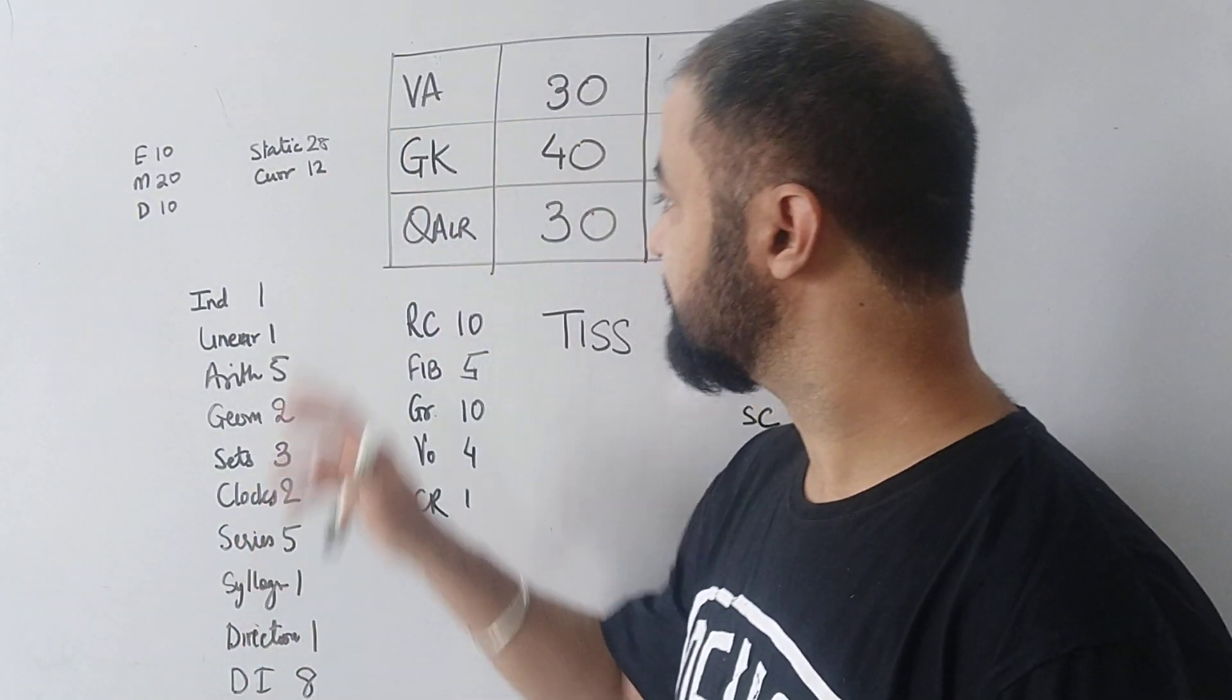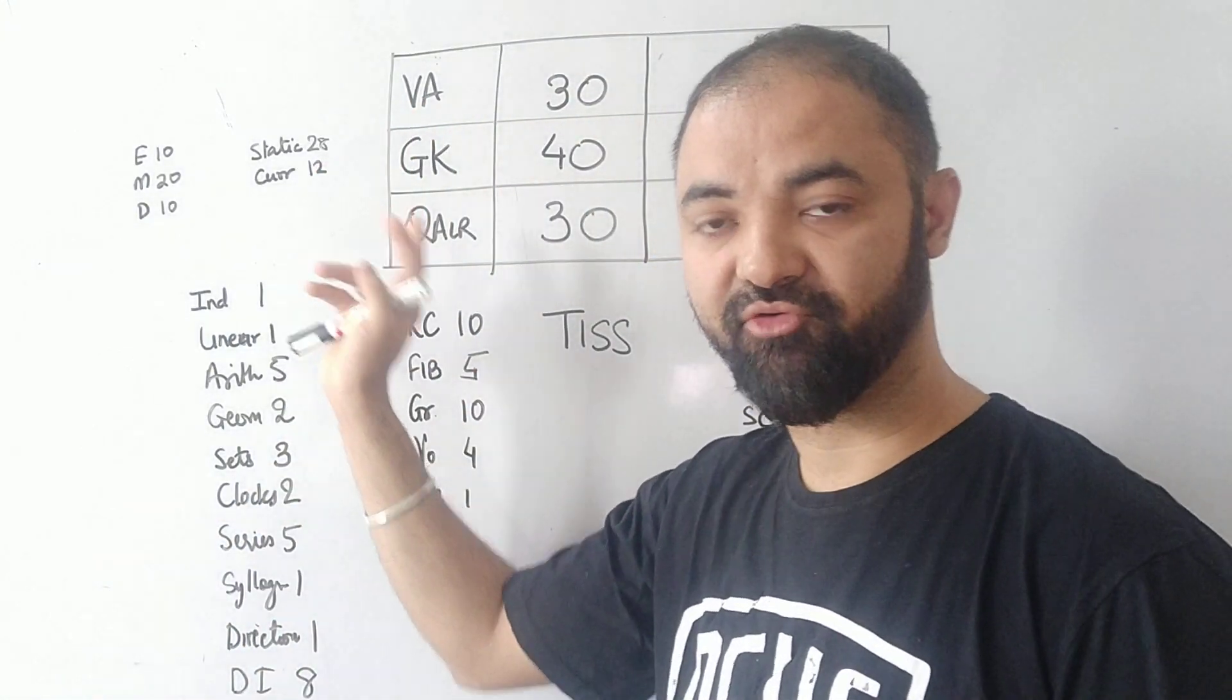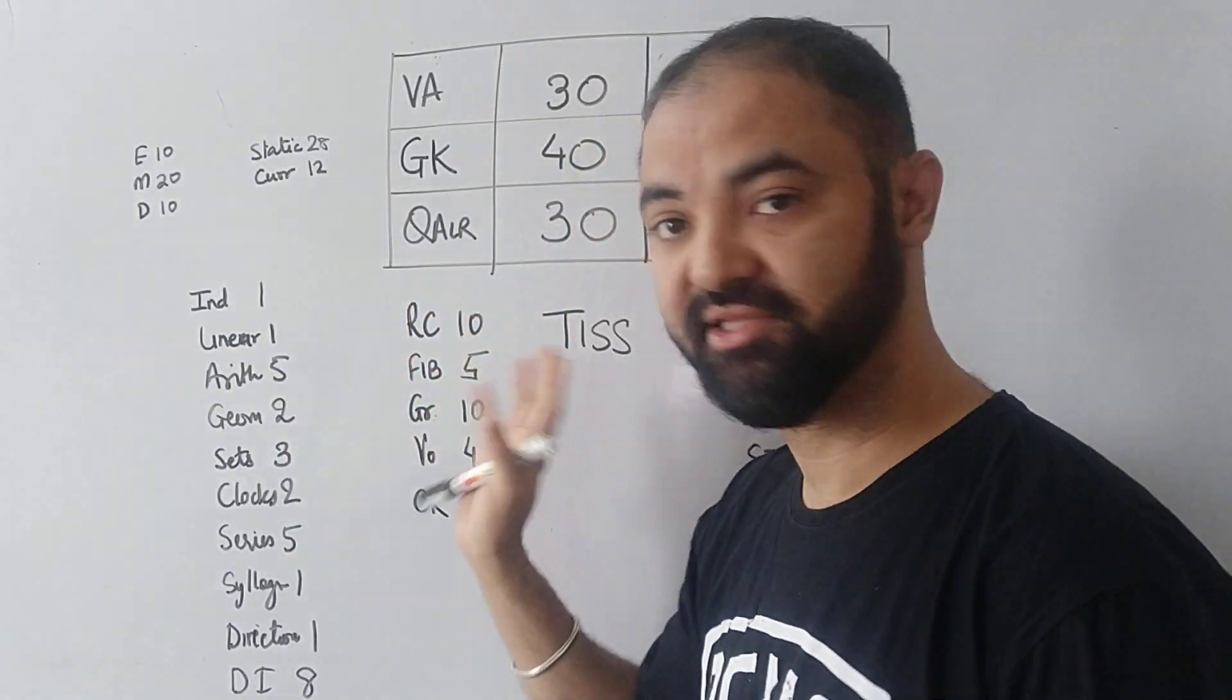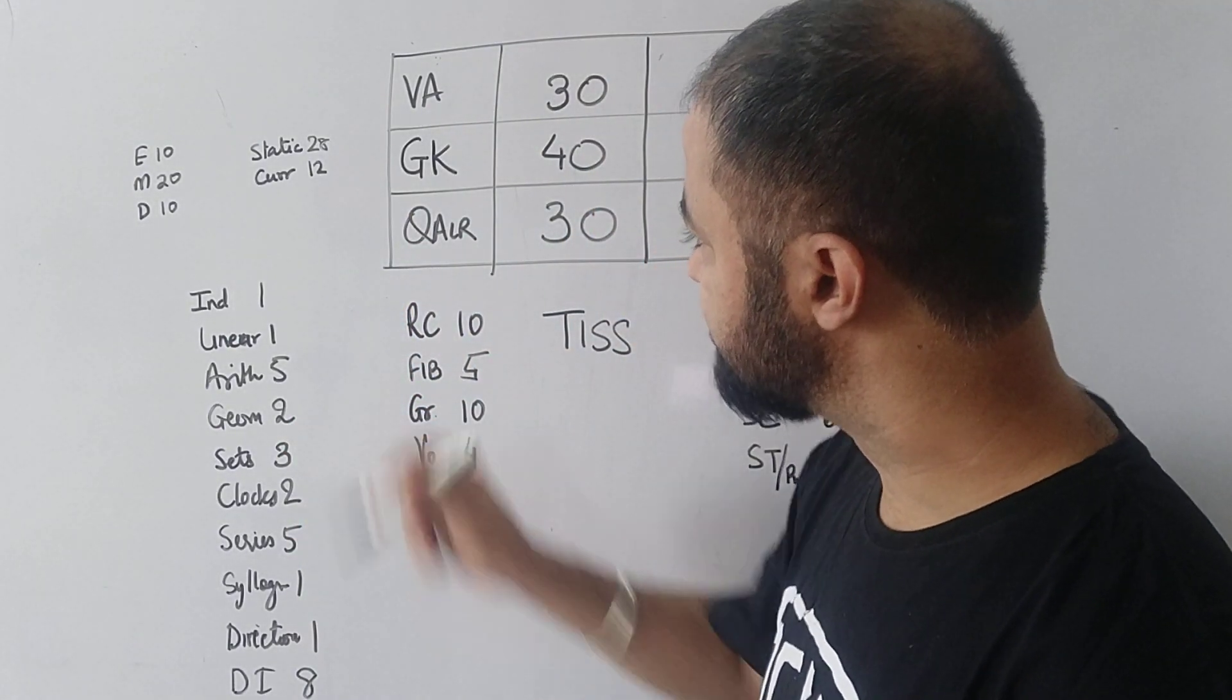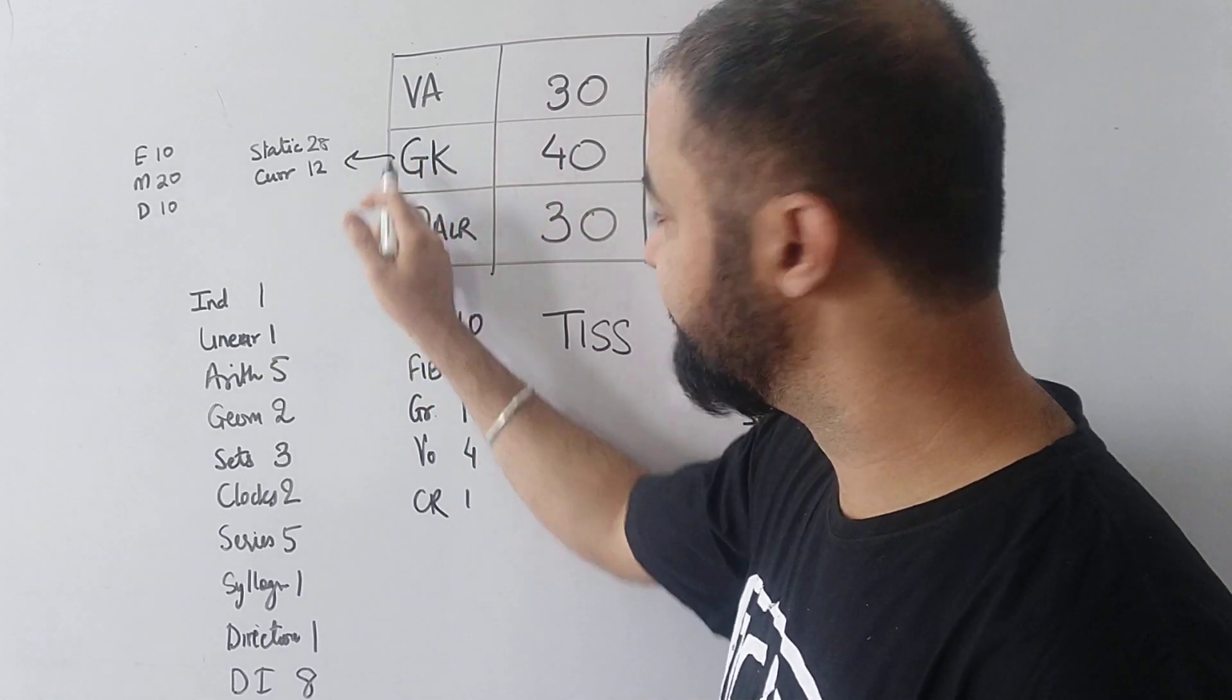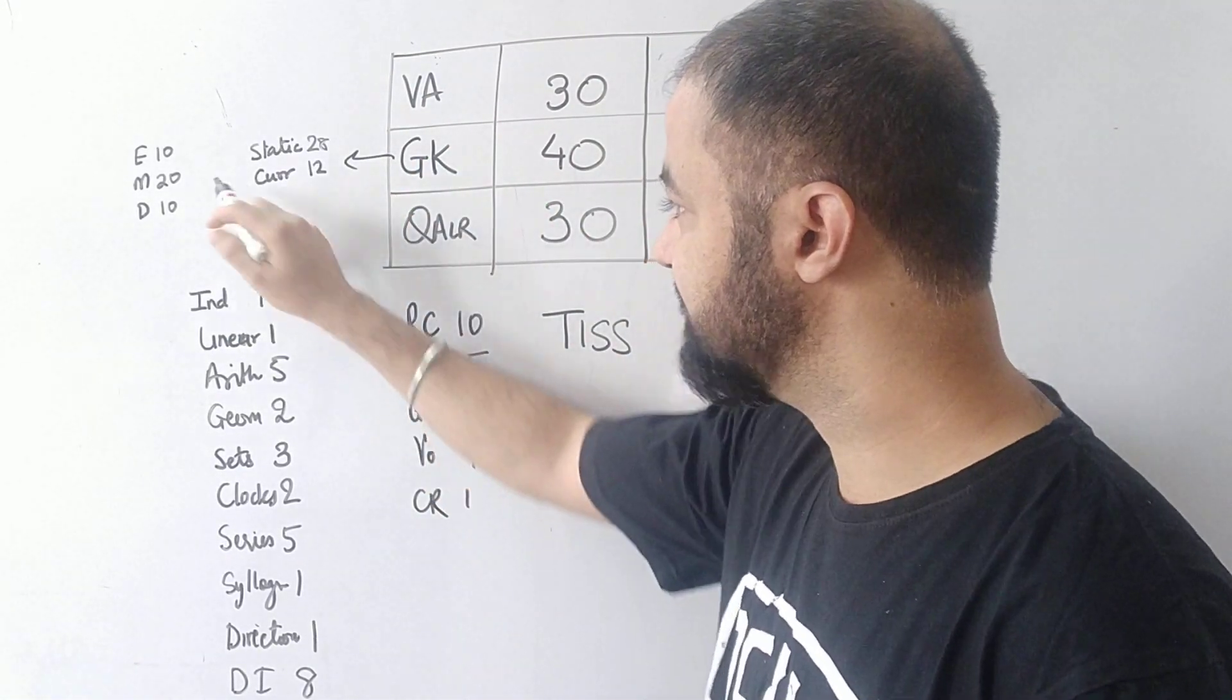This is the overall structure: verbal 30 questions, GK 40 questions, and quant 30 questions in the TISS paper. Let's talk about the GK part first because the main deciding factor is going to be GK.